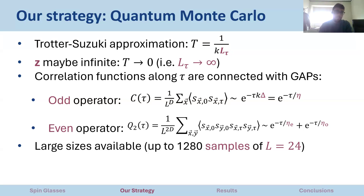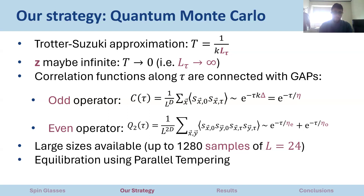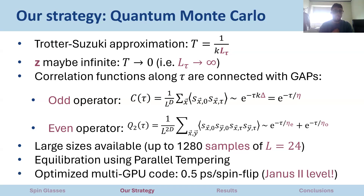We used this strategy to simulate larger systems. The largest we simulated is L=24, with many samples to obtain good statistics. The program uses a parallel tempering algorithm for equilibration. Without going into details, we used a multi-GPU code developed from scratch, and we obtained very good performance — specifically, the spin update speed is comparable to special-purpose hardware like Janus.